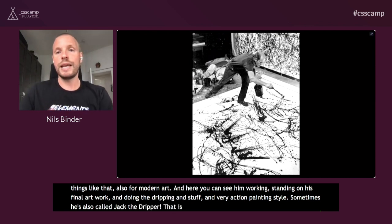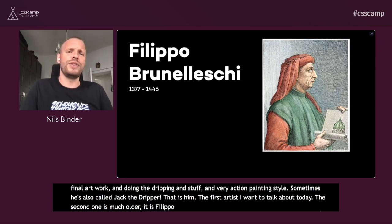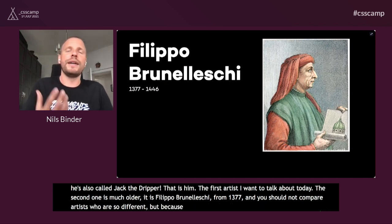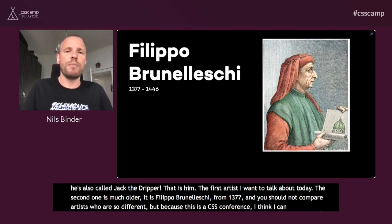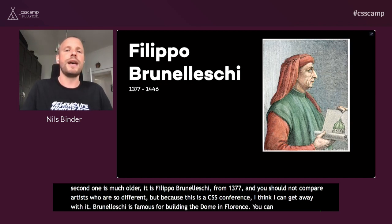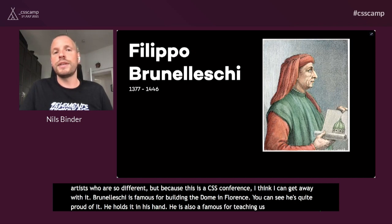That's the first artist. The second one is much older — it's Filippo Brunelleschi, from 1377. Normally you shouldn't compare artists that are so different, but since this is a CSS conference, I think I can get away with it. Brunelleschi is famous for building the dome in Florence. But he's also famous for teaching us how to draw with a constructed linear perspective.